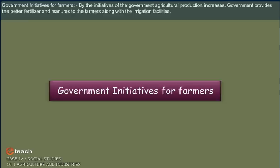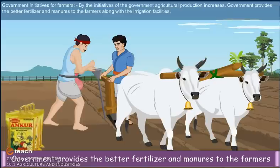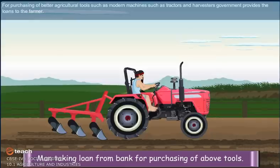Government initiatives for farmers: Through government initiatives, agricultural production increases. The government provides better fertilizers and manures to farmers along with irrigation facilities. For purchasing better agricultural tools such as modern machines like tractors and harvesters, the government provides loans to farmers.